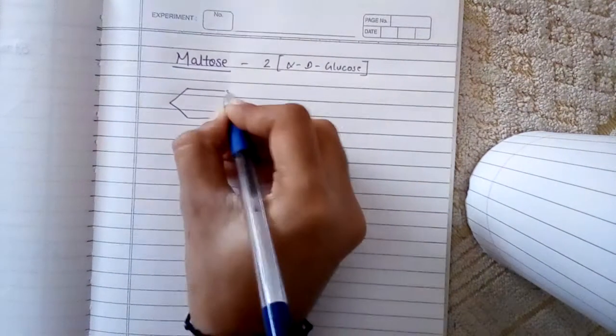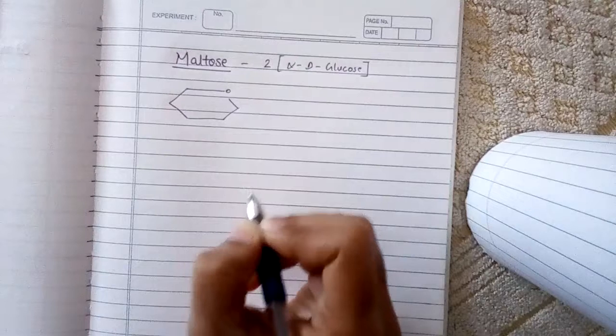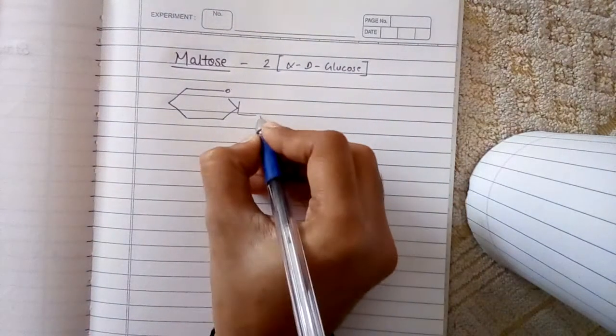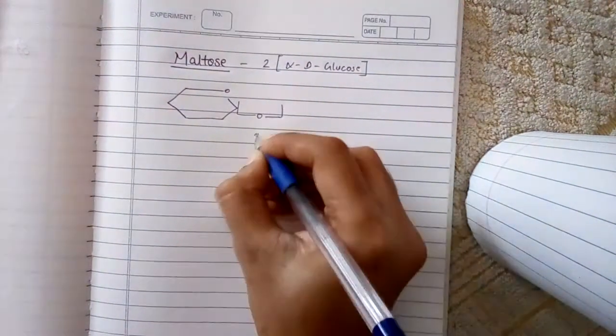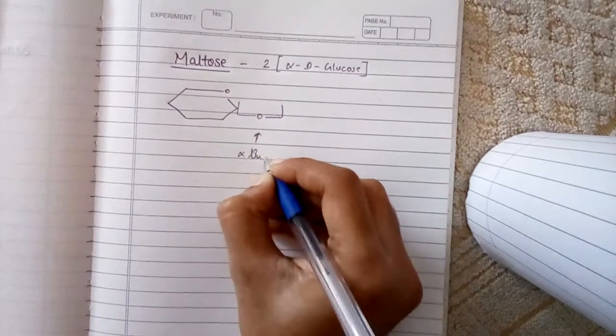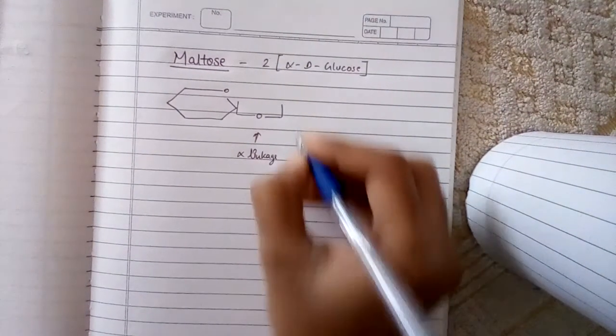Maltose is basically made up of two alpha D-glucose units. So let's make it. You know that this is our pyran structure. It is joined like this with this alpha linkage.